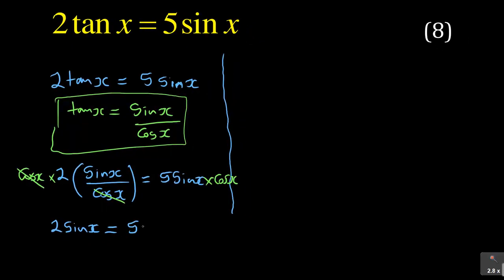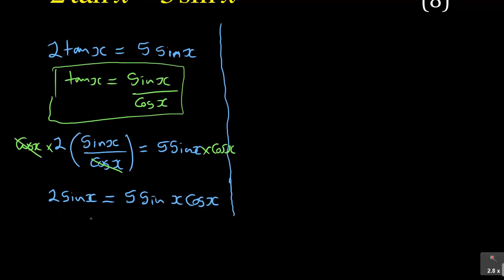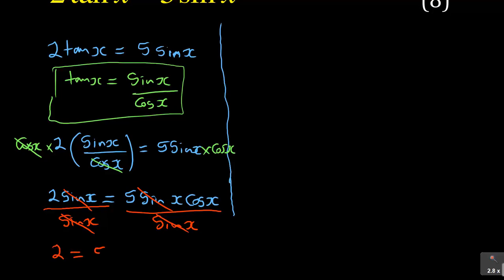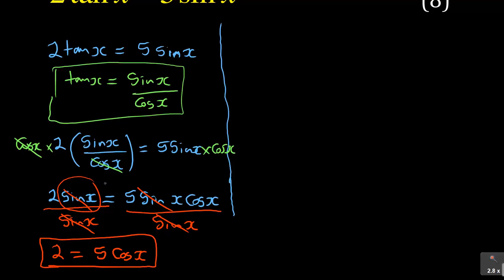So we have 2sin(x) = 5sin(x)cos(x). Now sometimes students are tempted to divide both sides by sin(x) so that sin(x) cancels and they get 2 = 5cos(x). It looks like progress, but what you need to know is you have already lost sin(x). Never divide by a variable — never divide by cos or sin because you are going to lose that sin or cos. This method is wrong.